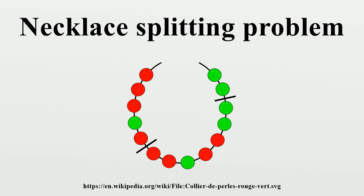If the necklace is arranged so that no T-split is possible, then for any two subsets D1 and D2 of color indices 1 through T, not both empty, a split exists such that: if a color is in D1, partition 1 has more beads of that color than partition 2; if a color is in D2, partition 2 has more beads of that color than partition 1; and if a color is in neither set, both partitions have equally many beads of that color. In other words, if the thieves have preferences in the form of two preference sets D1 and D2, not both empty, there exists a split so that each thief gets more beads of types in their preference set than the other, and the rest are equal.